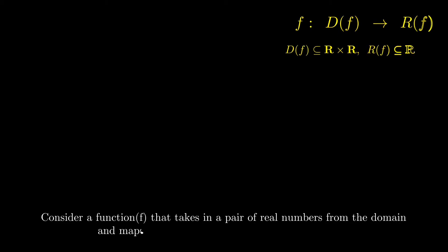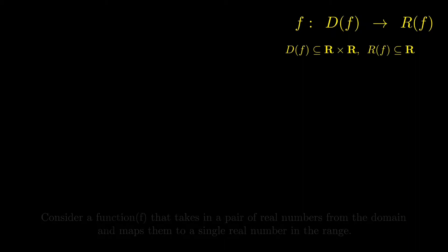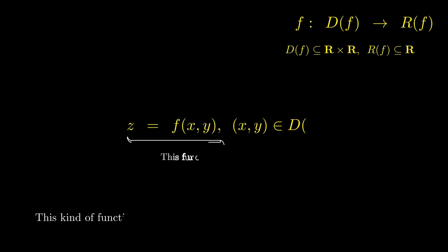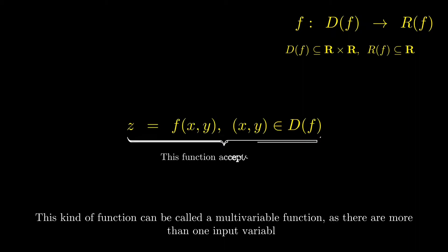Consider a function f that takes in a pair of real numbers from the domain and maps them to a single real number in the range. This kind of function can be called a multivariable function, as there are more than one input variable.